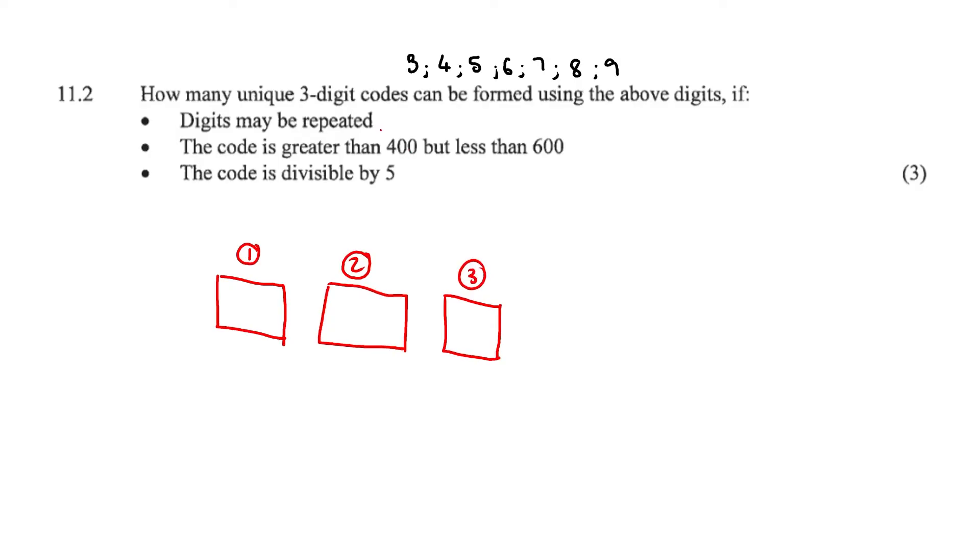The digits may be repeated, so we don't utilize a factorial here. It's going to be 7 times 7 times 7. But we have some further restrictions.